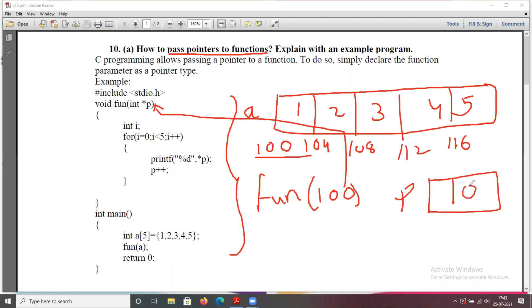Now i equals 0, i less than 5, so we enter into the block. Asterisk p, or *p, means dereferencing pointer p at address 100, which gives us 1. It prints 1. Similarly, it prints the remaining numbers 1, 2, 3, 4, 5. Here we call the function with an address, which is called passing pointers to functions.